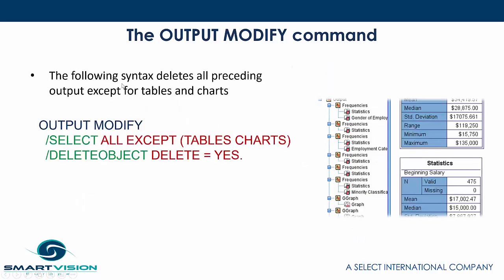This example syntax deletes all preceding output except for tables and charts. The procedure says output modify, then slash select all except tables and charts, and then delete everything except the stuff it didn't select — which is tables and charts — so it leaves them alone.